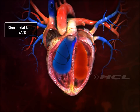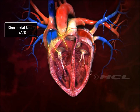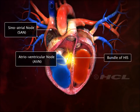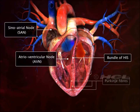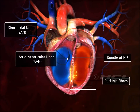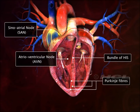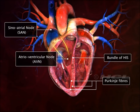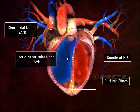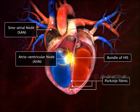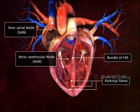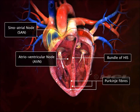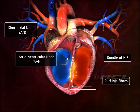The sinoatrial node, atrio-ventricular node, bundle of His, and Purkinje fibers represent the specialized cardiac tissue. These fibers are auto-excitable as they have the potential to generate electrical activity without any external stimuli. This makes the heart beat continuously.